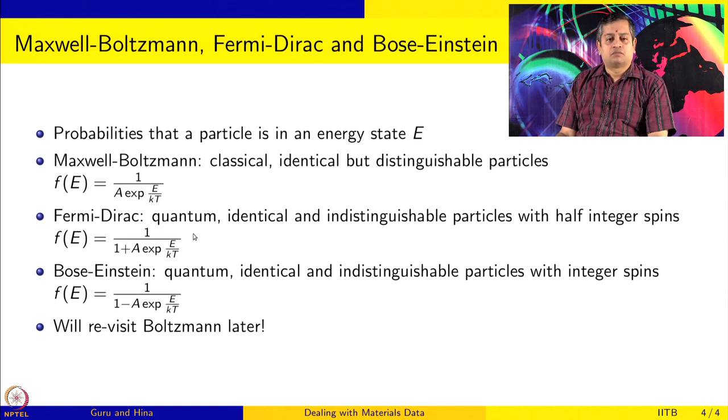Fermi-Dirac is a quantum probability distribution and it looks at identical and indistinguishable particles with half-integer spins. The distribution is 1 by 1 plus A exponential E by kT.